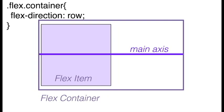Flex-direction is a property of the flex container that you can set to be either row, row-reverse, column, or column-reverse.